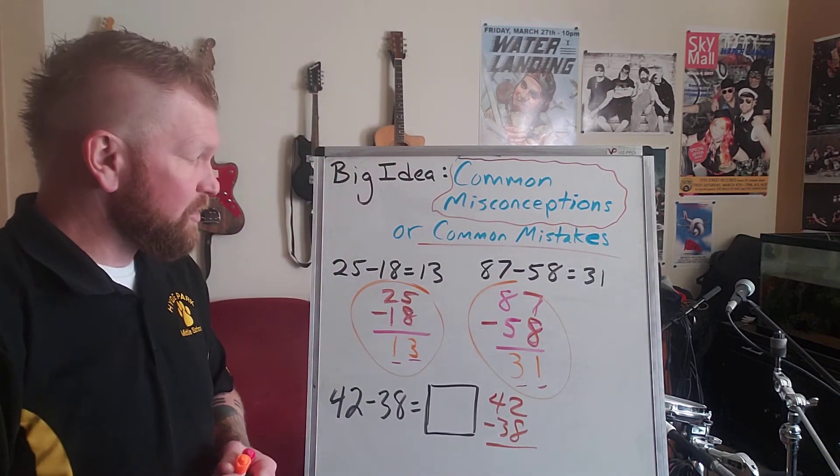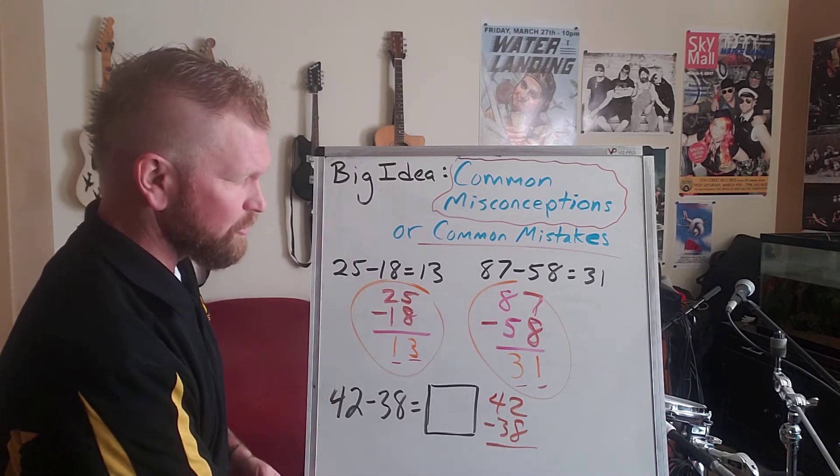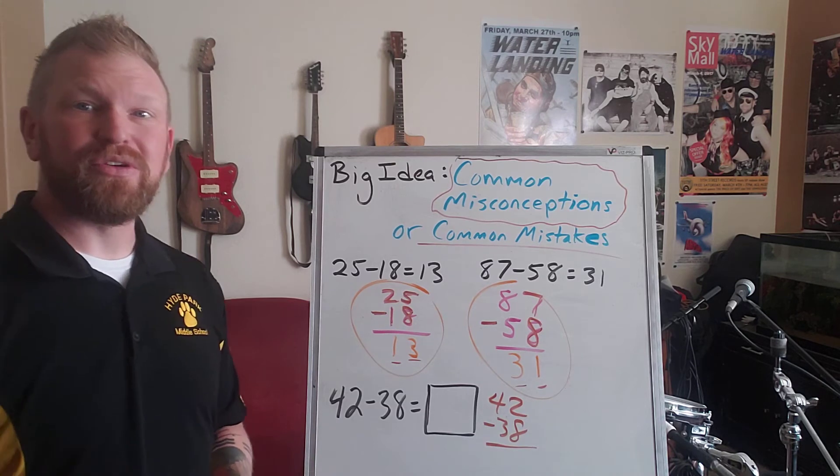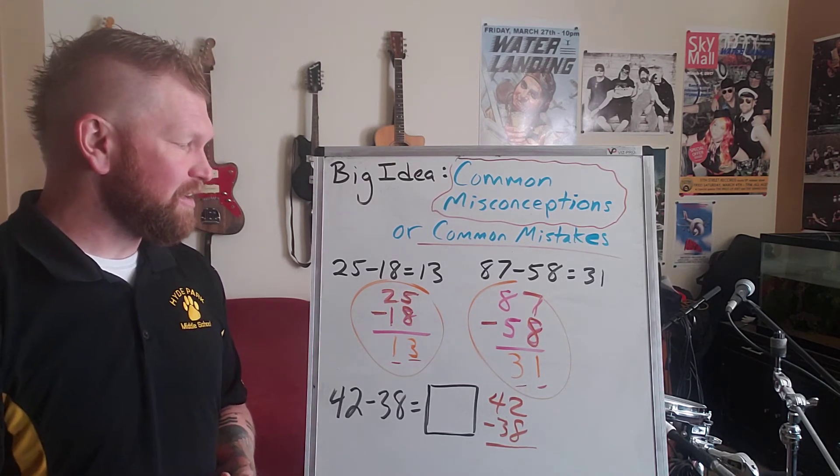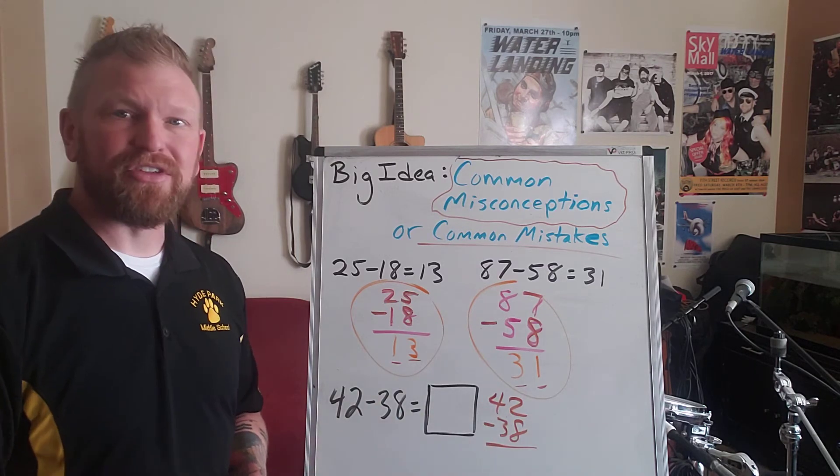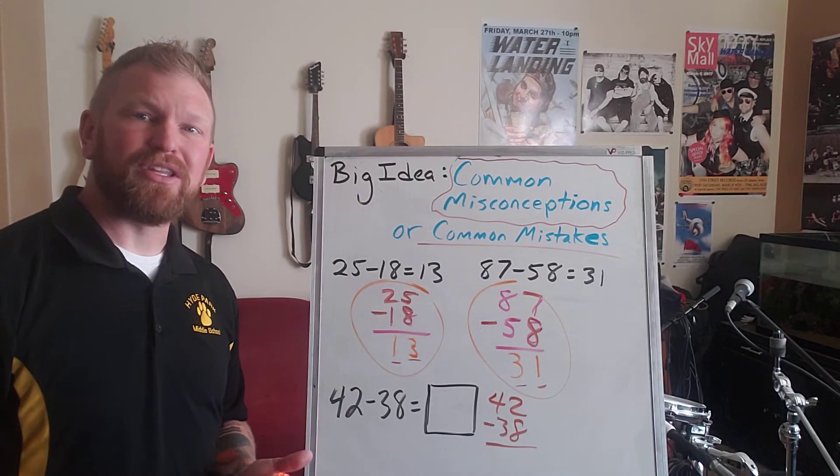So if we're helping students understand the algorithm, we would tell them, well, you can't do 2 minus 8. You've got to do regrouping. You've got to do borrowing. But again, this student is going to make that same exact mistake. It's a common mistake that they're going to make. They are not going to regroup and solve this the correct way. What digit will they put in the ones place, and what digit will they put in the tens place?